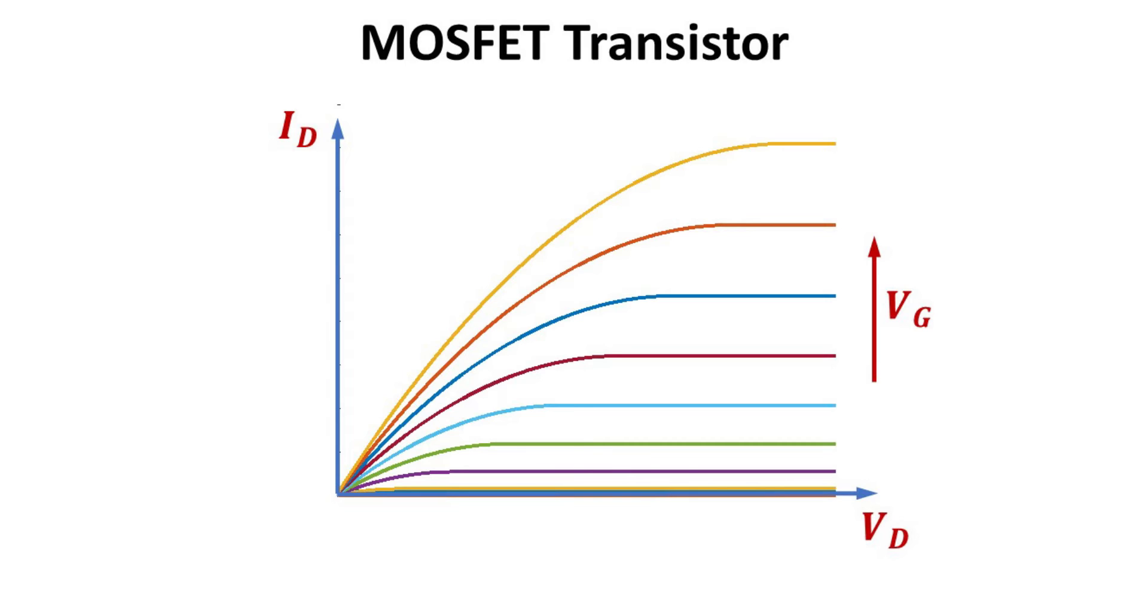The gate voltage Vg also controls the current and the point of saturation, and allows circuit designer to tune the biasing point of the amplifier. In fact, the Vd where saturation occurs is given by Vg minus Vt.